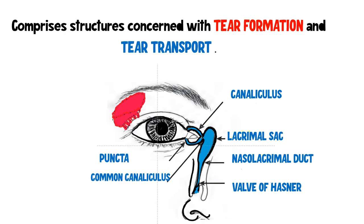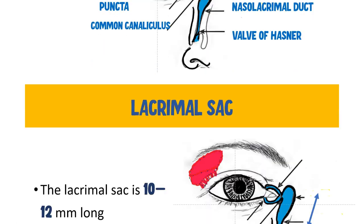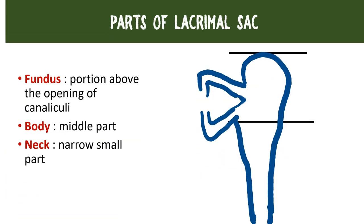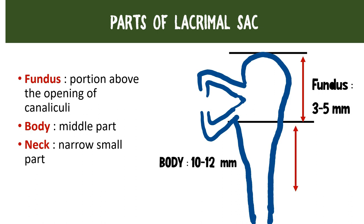Moving on to the lacrimal sac: it is about 10 to 12 mm long. The common canaliculus at its entry into the lacrimal sac divides it into different parts. We have the fundus — the upper part, about 3 to 5 mm. Then the body — the middle part, about 10 to 12 mm. And finally the neck — the narrow part where the lacrimal sac becomes the nasolacrimal duct. A memory aid: the body is about 10 mm and the fundus is about half of that — approximately 5 mm.